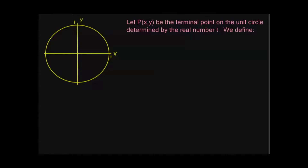I've typed up a definition for us. Let P(x,y) be the terminal point on the unit circle determined by the real number t. Just a quick review: if t equals pi over 4, remember that value t was associated with a terminal point. Positive direction means we move counterclockwise from the standard initial position. Pi over 4 moves us 1/8 of the total distance around the circle 2π. So this would be my terminal point P, with x-coordinate of root 2 over 2 and y-coordinate of root 2 over 2. That's what I mean when I say let P(x,y) be the terminal point — x and y are the two coordinates determined by the real number t.